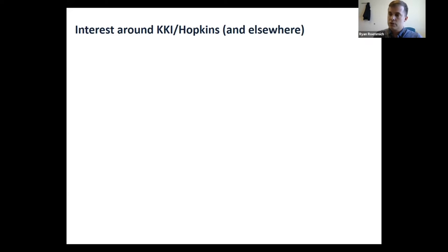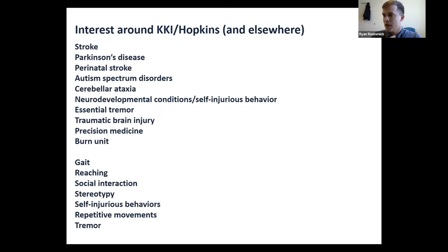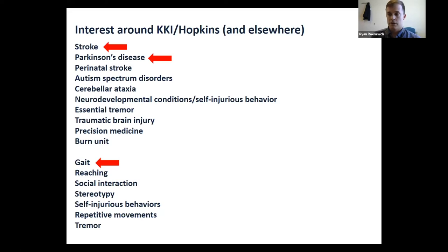We've had significant interest around Kennedy Krieger and Hopkins in terms of both the spectrum of conditions and behaviors people are interested in studying — ranging from conditions common in older adults to pediatric populations, and various upper and lower extremity behaviors. Today we're going to focus on two patient populations in particular: people who've had a stroke and people with Parkinson's disease, with a primary focus on walking.